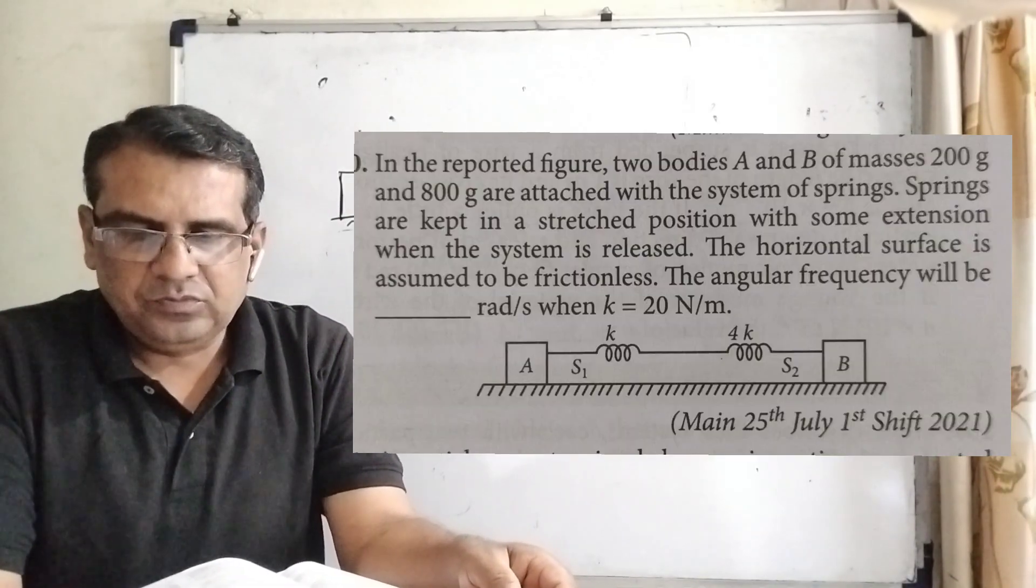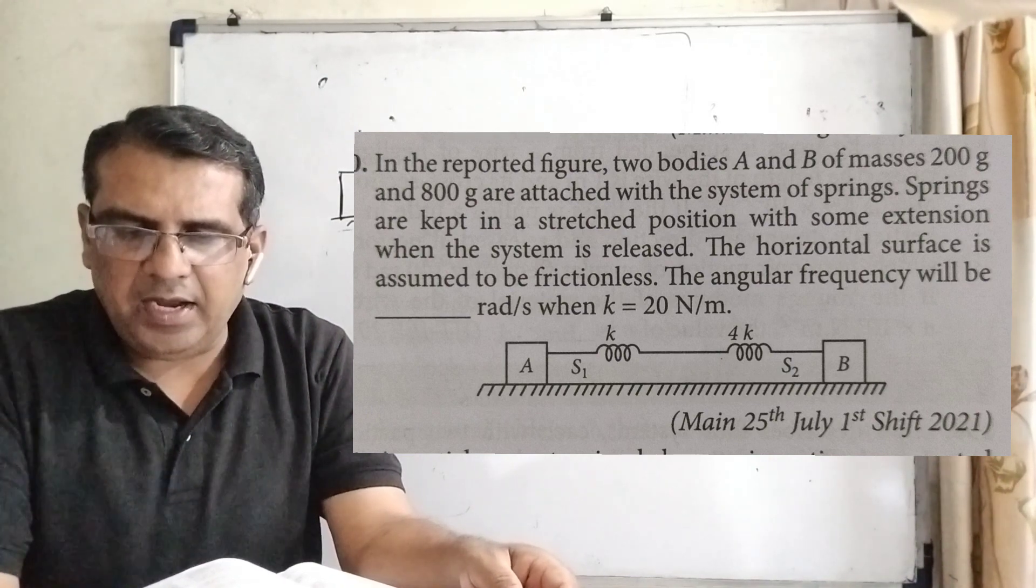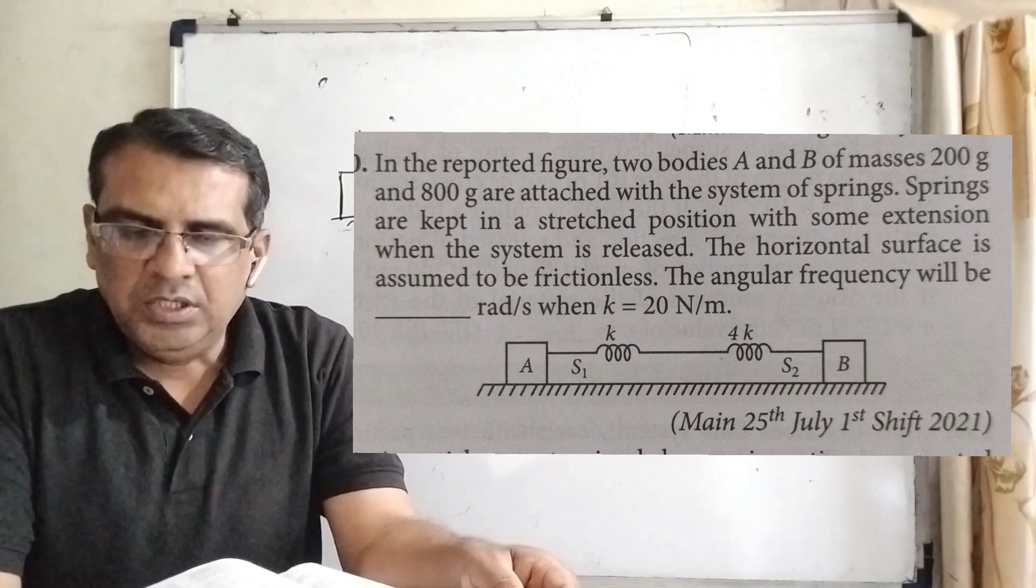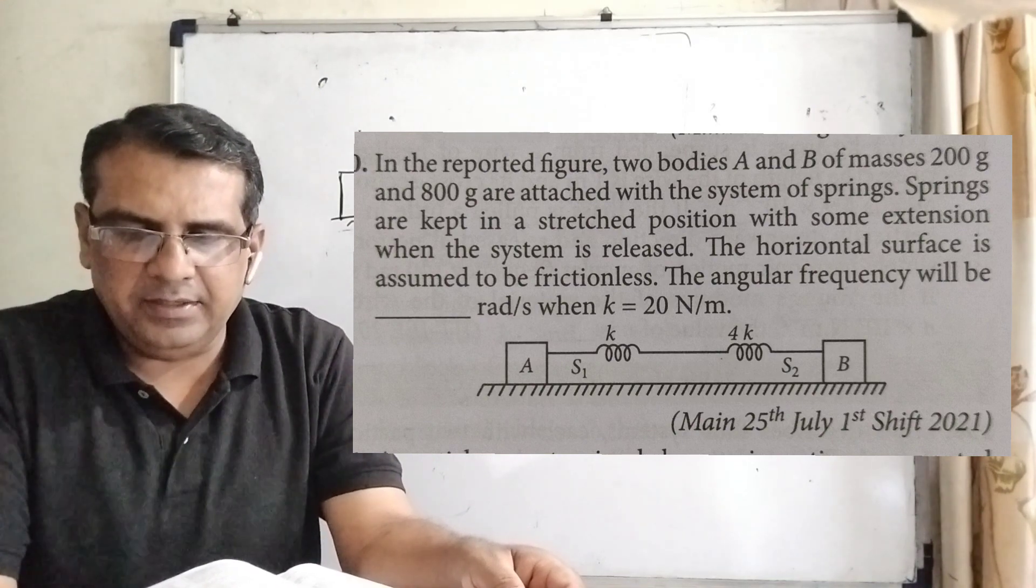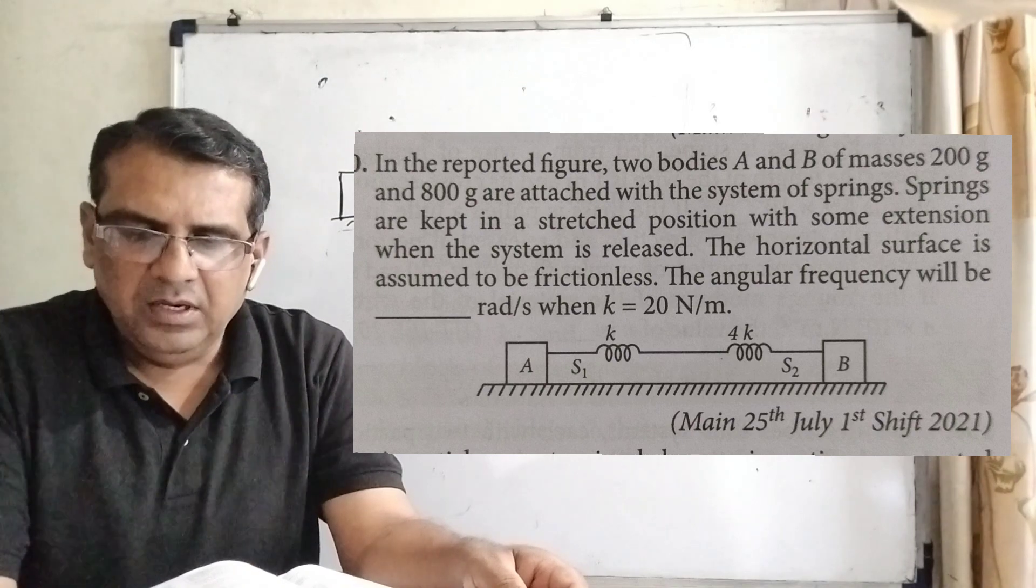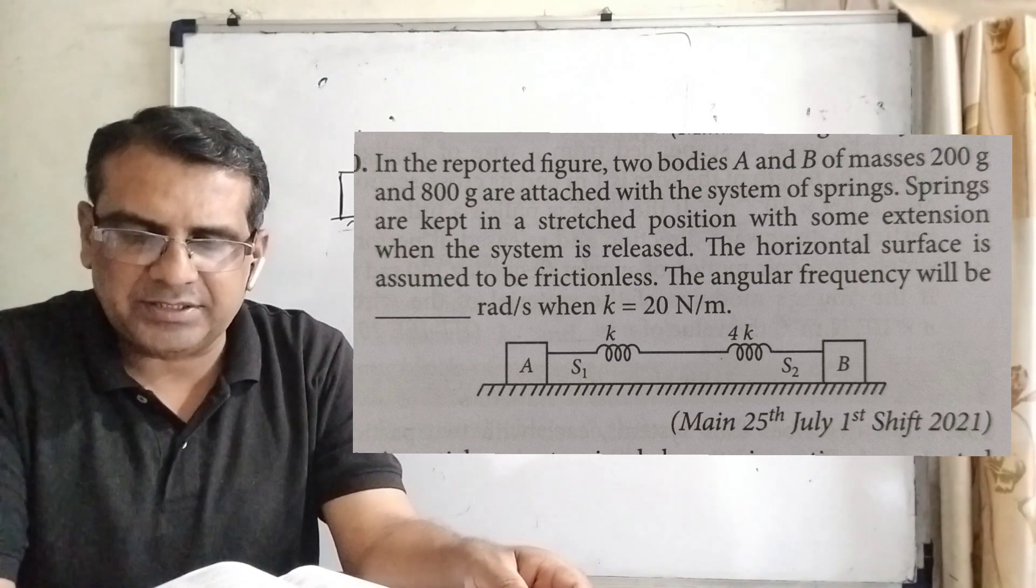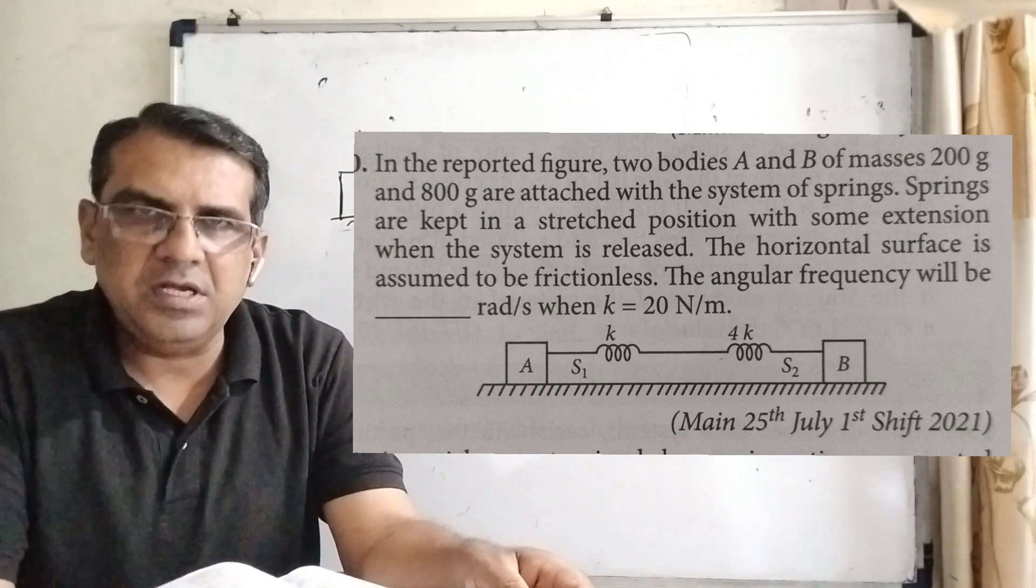Given question: In the reported figure, two bodies A and B of masses 200 gram and 800 gram are attached with a system of springs. Springs are kept in a stretched position with some extension when the system is released.